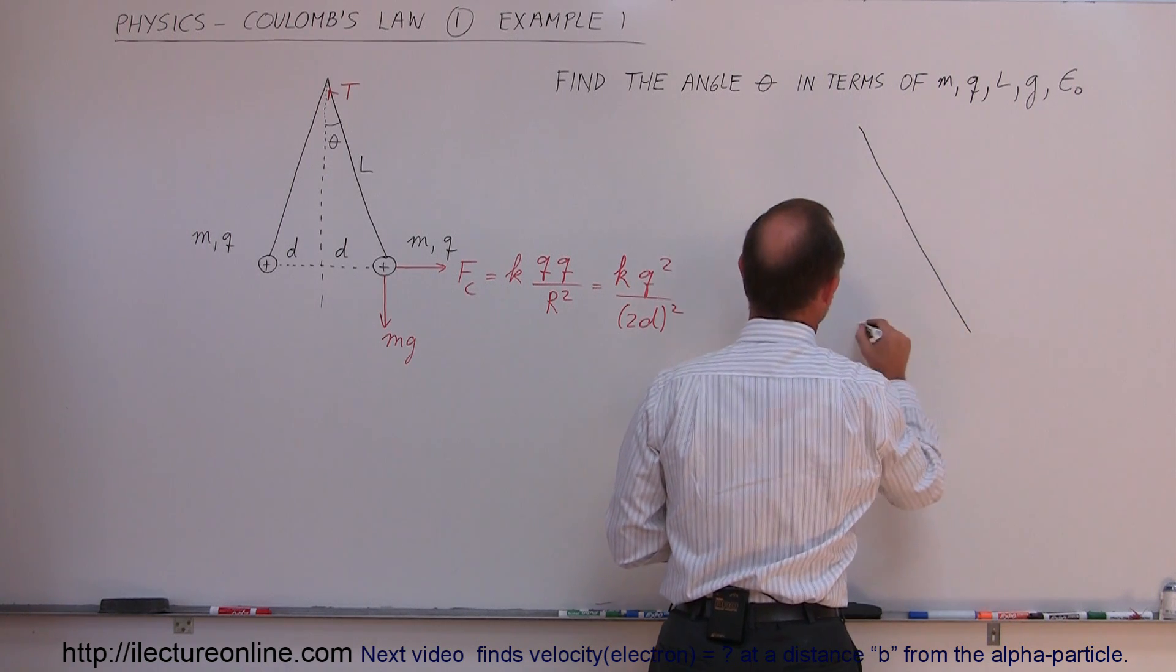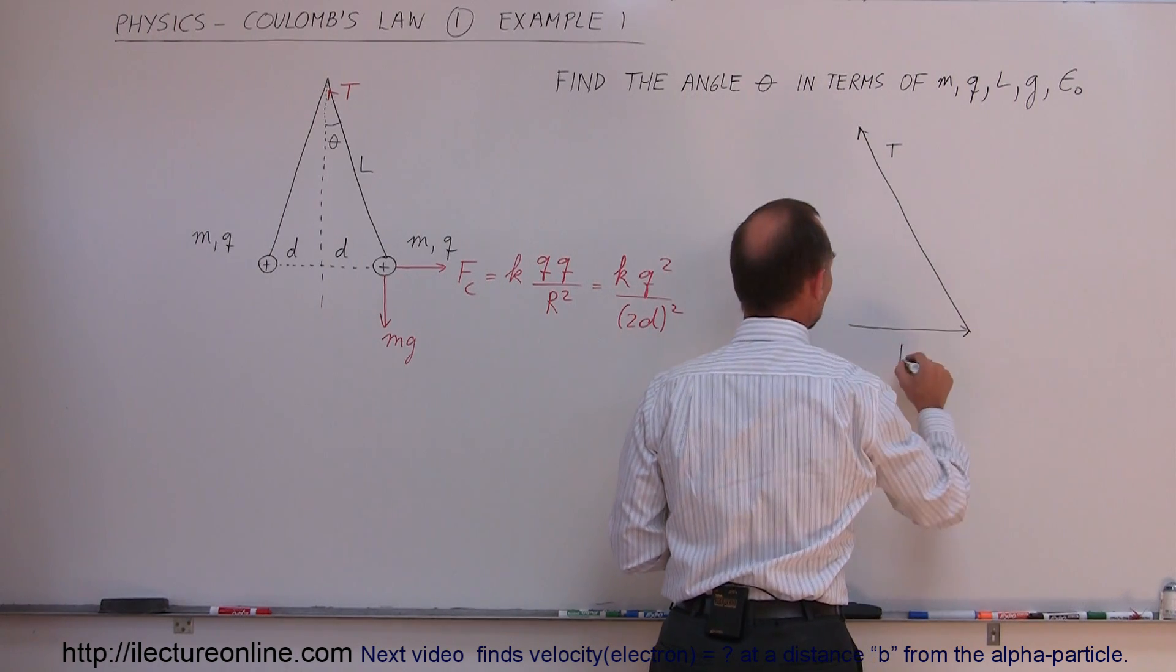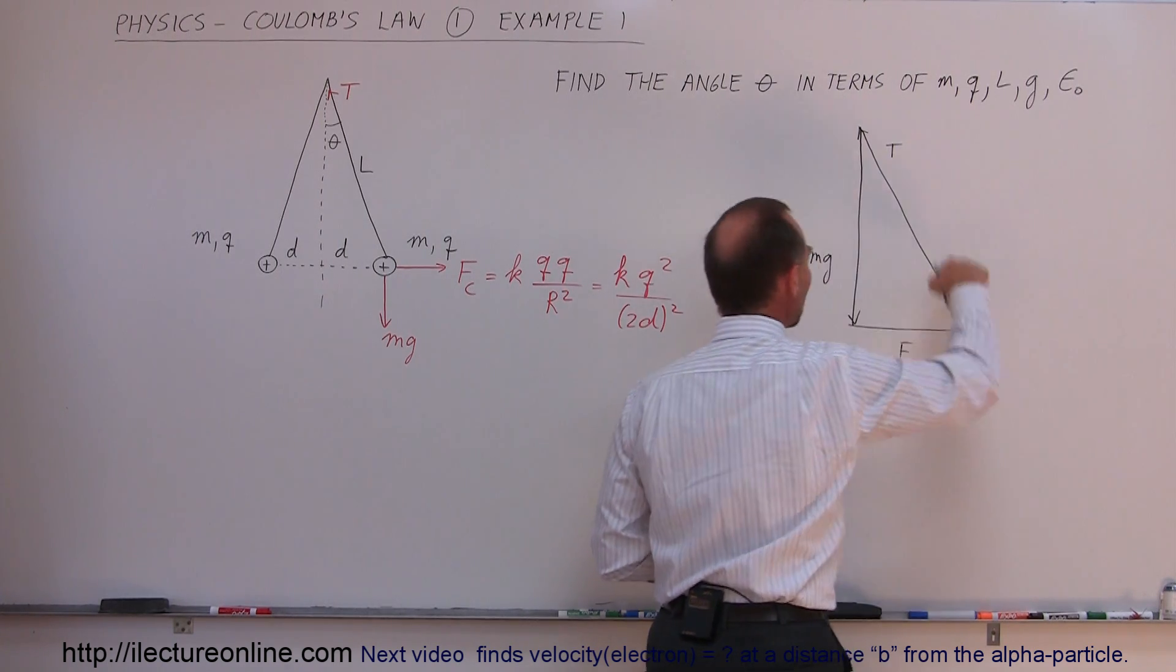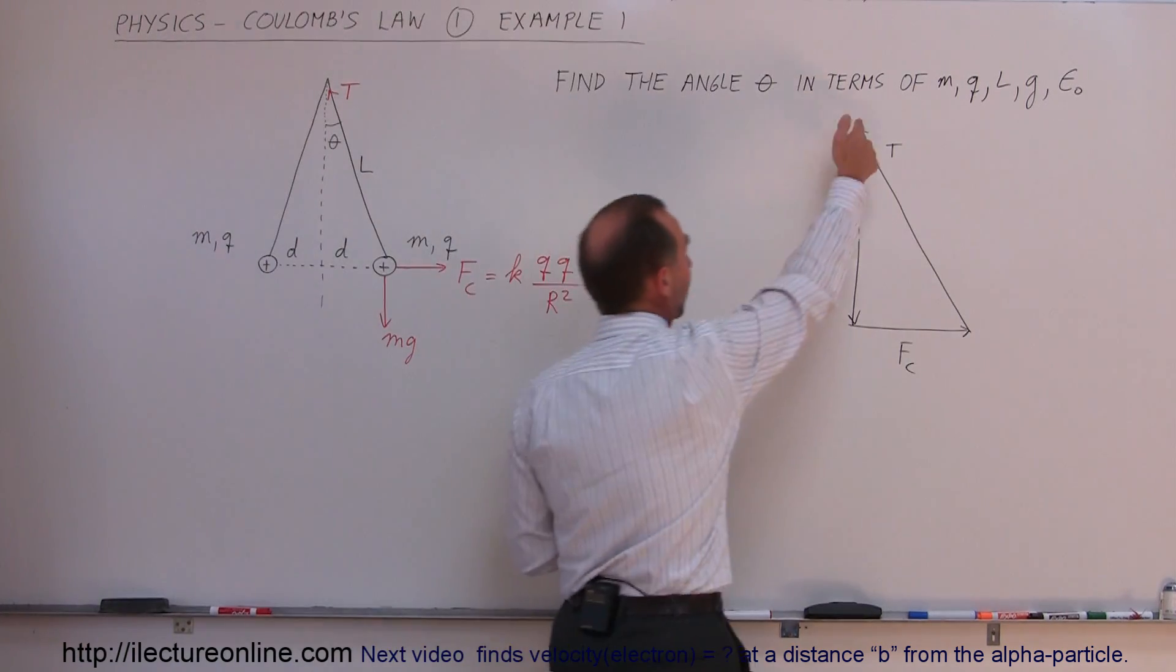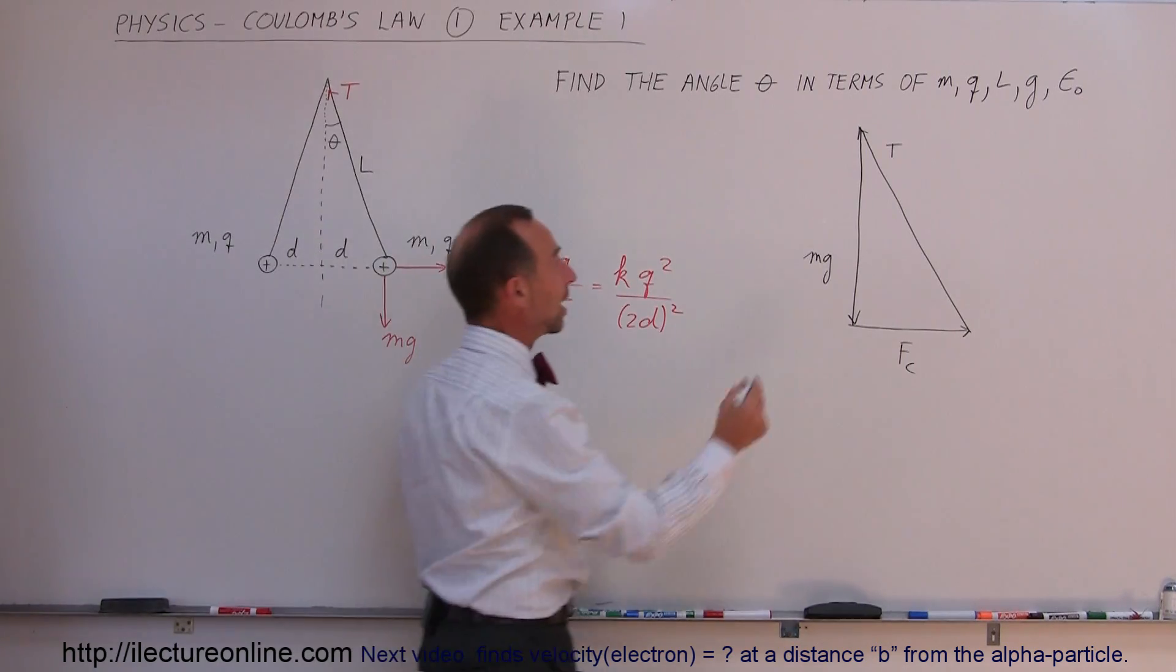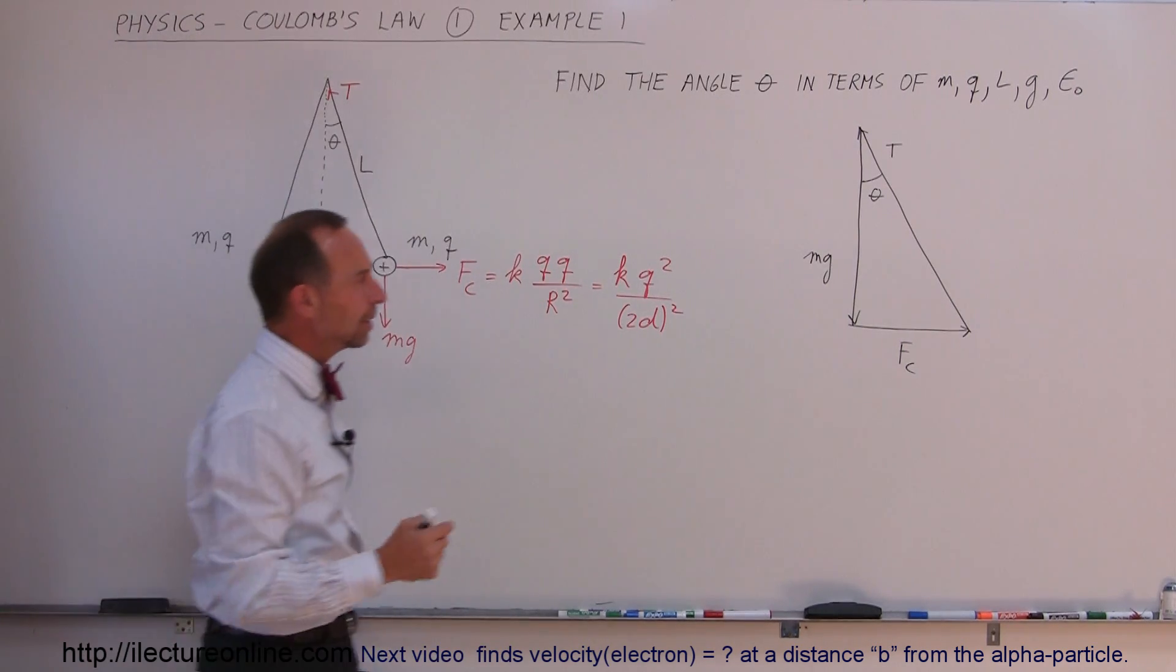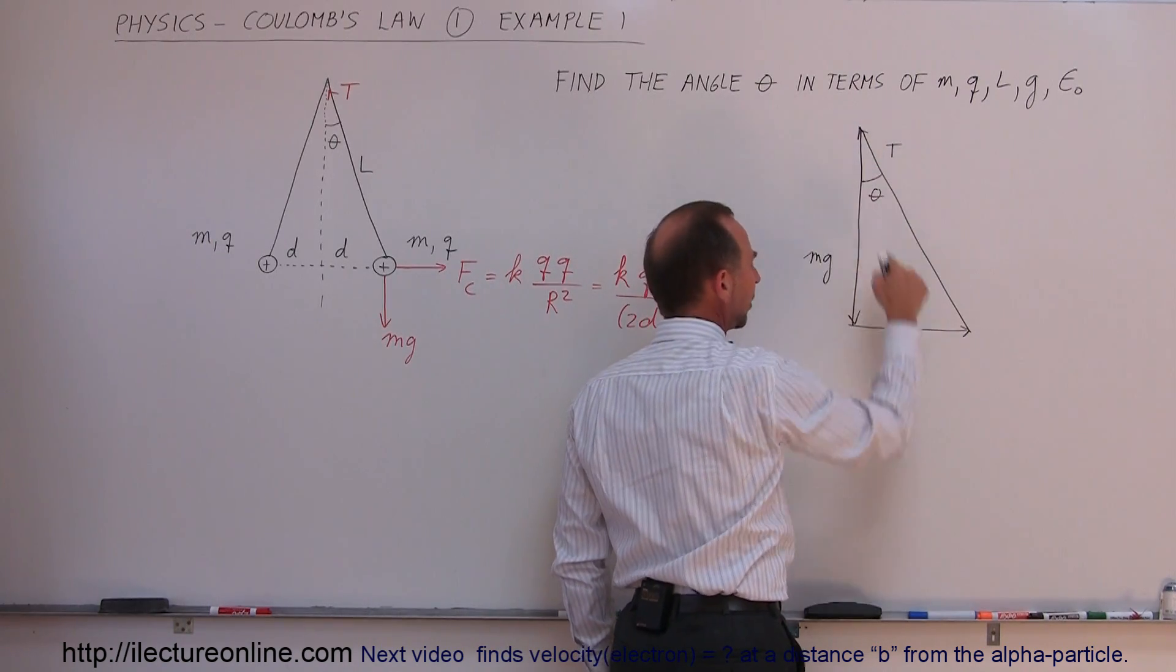We have the tension in this direction, the Coulomb force in this direction, and then the force due to gravity in this direction, so it would be the mg. Here we have the sum of the three forces, and they must add up to zero. When we go all the way around the triangle, we get back to the same spot where we started. Notice that this angle right here theta is the same angle theta that we find in here.